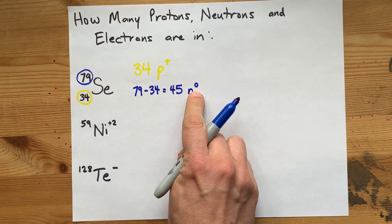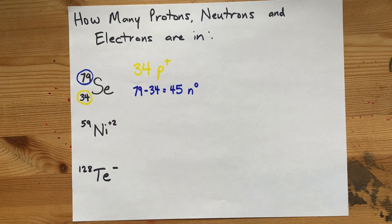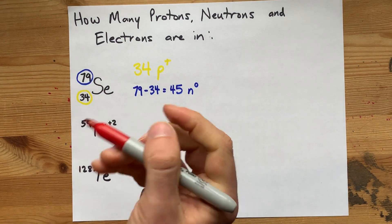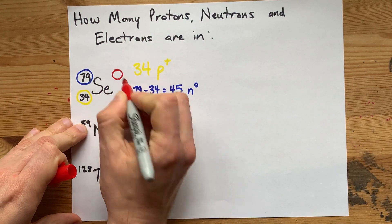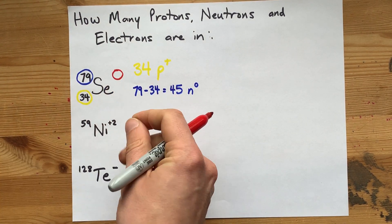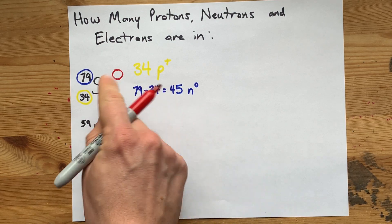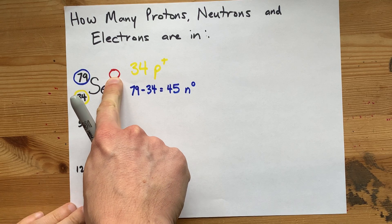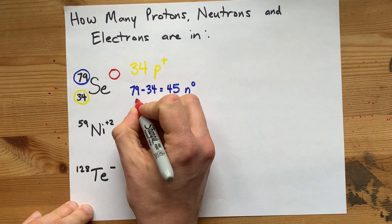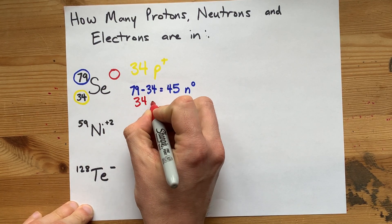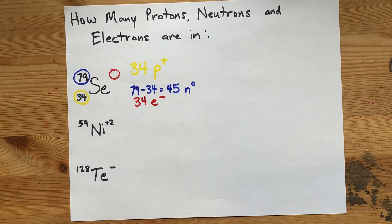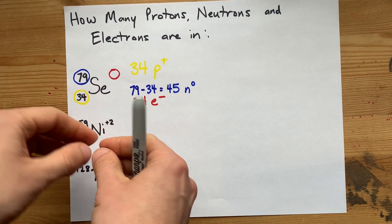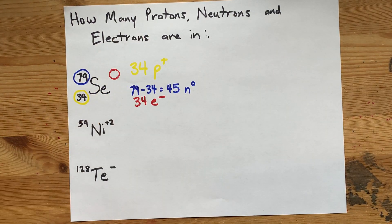I put n with a little superscript 0 for no charge. To get the number of electrons, you have to base it off of the charge. Now, this one has no charge. It's neutral. That's not a 0. I'm actually just circling the fact that it's blank. If there is no charge, the number of electrons is the same as the number of protons. Because same number of pluses and minuses give you a total charge of 0.